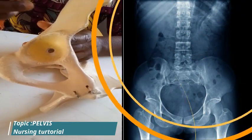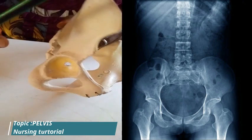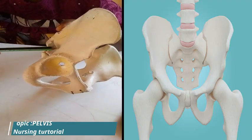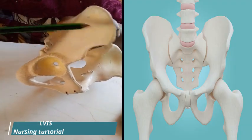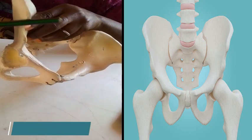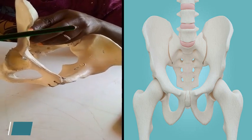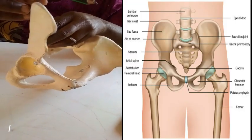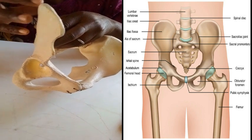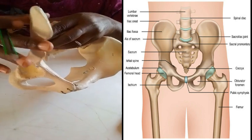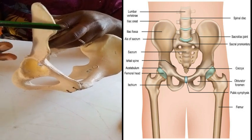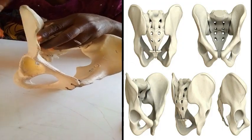The ileum is made up of two parts: the upper part and the lower part. The upper part is the flared-out portion of the ileum, and it is known as the ileal crest. When the hand is placed on the hip, it rests on the ileum crest.